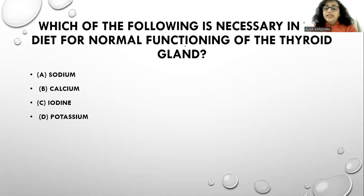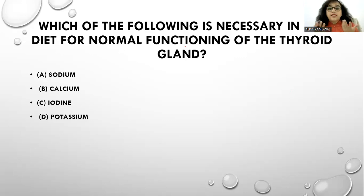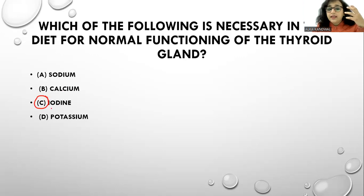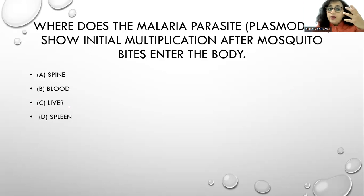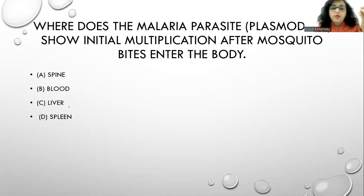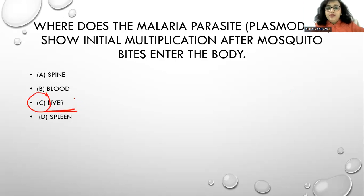Which of the following is necessary in the diet for the normal functioning of the thyroid gland? That is iodine — iodine is very important for the normal functioning of the thyroid gland. Where does the malaria parasite Plasmodium show initial multiplication after a mosquito bite enters the body? The initial multiplication happens in the liver.